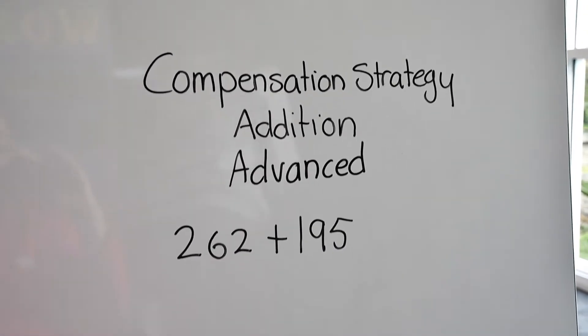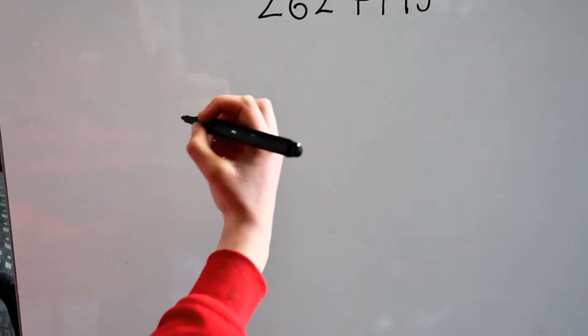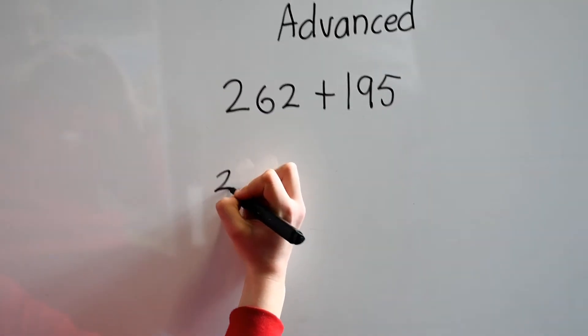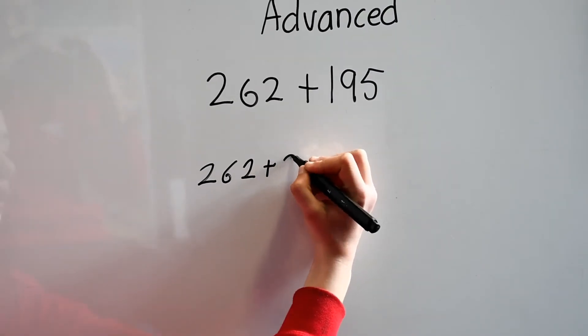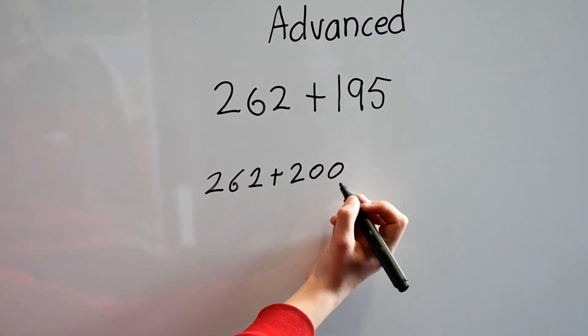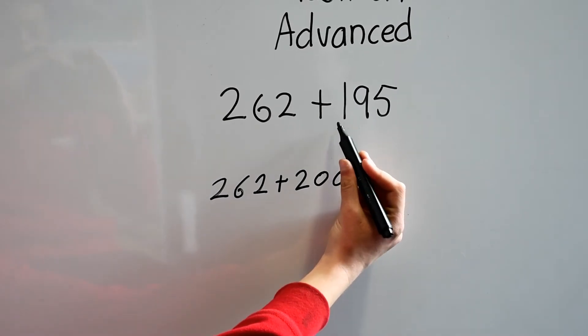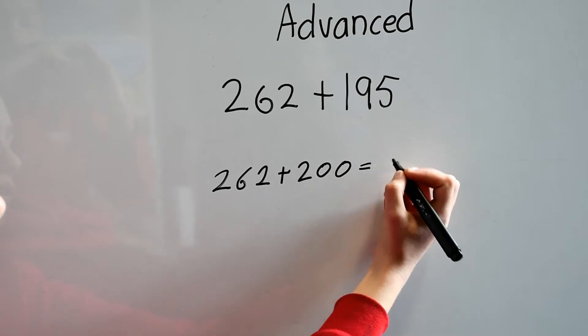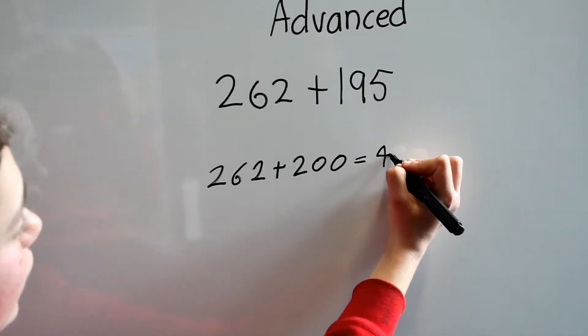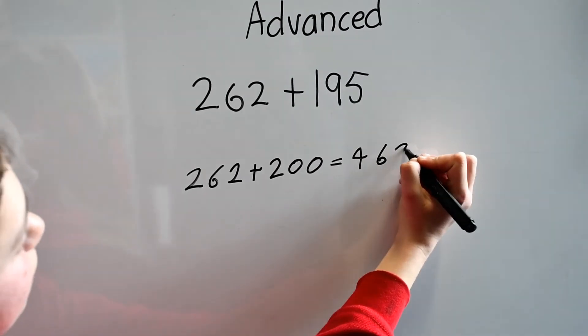We start with 262 plus 200 because we rounded 195 up to 200. This equals 462.